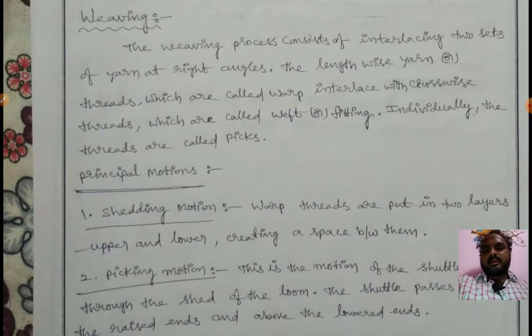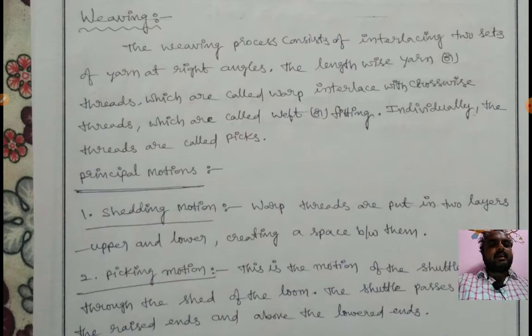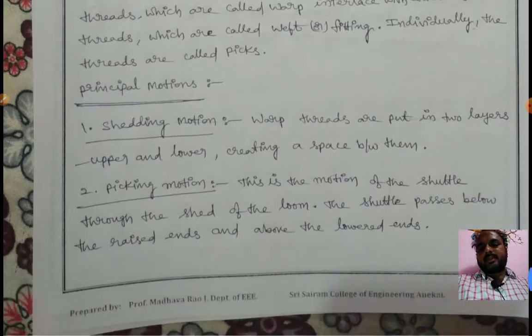Weaving is a process consisting of interlacing two sets of yarn at right angles. The lengthwise threads, called warp, are interlaced with the crosswise threads called weft or filling. Individually, the threads are called picks.